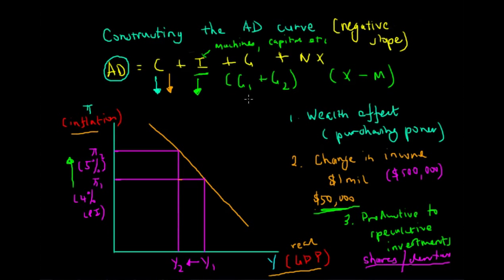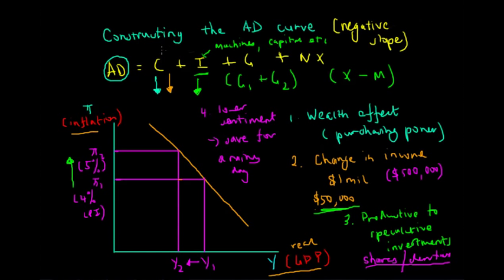By the same token, consumers now have very low sentiment — the fourth effect — and are more likely to save for a rainy day. Because there is low aggregate demand, decreasing consumption, and decreasing investment expenditure, there are more likely to be layoffs in the workforce. Consumers and households must insulate themselves from the possibility of losing their jobs and therefore not having a sustainable income, so they save more of their income and consumption expenditure goes down.